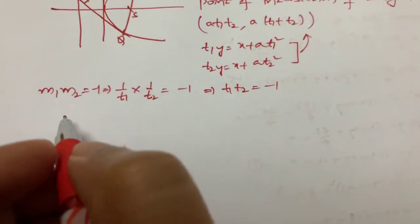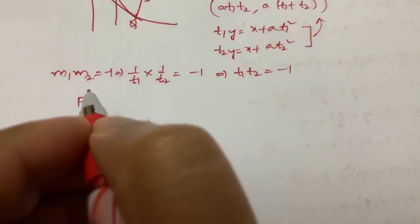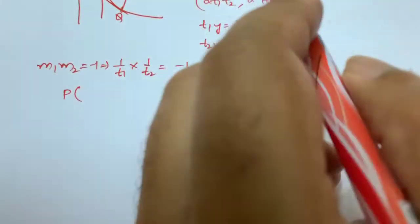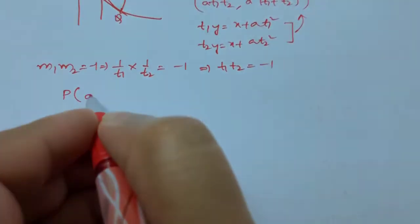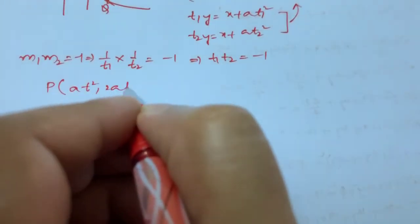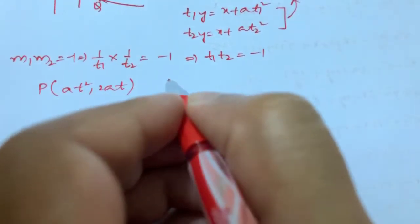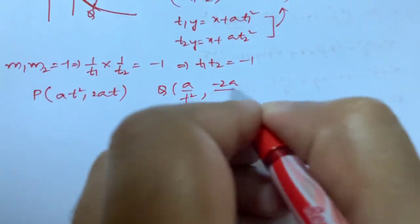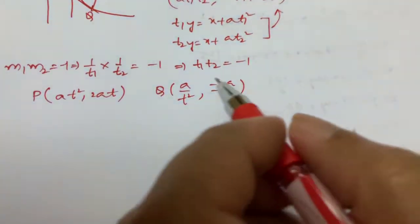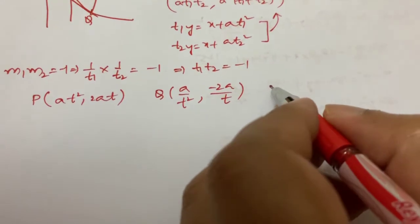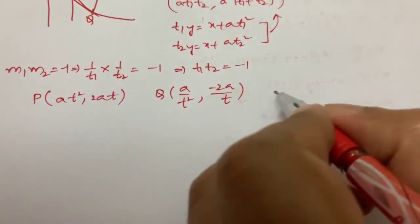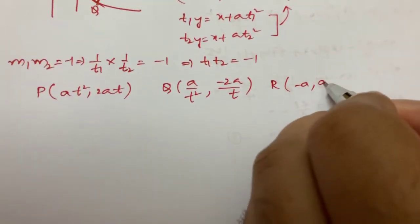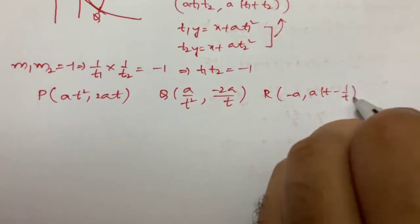Now I will convert everything to one coordinate — instead of t₂, I will write in terms of t only. So P becomes (at², 2at), Q becomes (a/t², −2a/t), and the intersection point R is (−a, a(t − 1/t)).